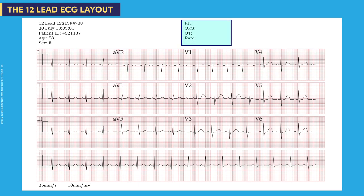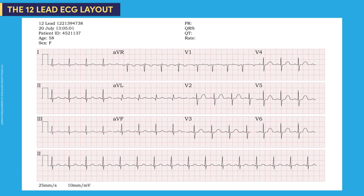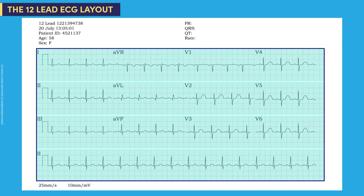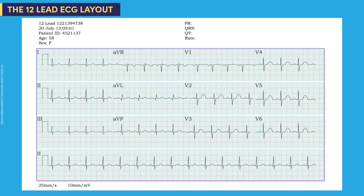The top right area displays the ECG reporting data. The bottom left displays the print speed of 25 millimeters per second and a standardization setting of 10 millimeters per millivolt. The grid has small and large boxes for measuring the waveforms of the ECG. This 12-lead ECG layout includes standard leads 1, 2, and 3.